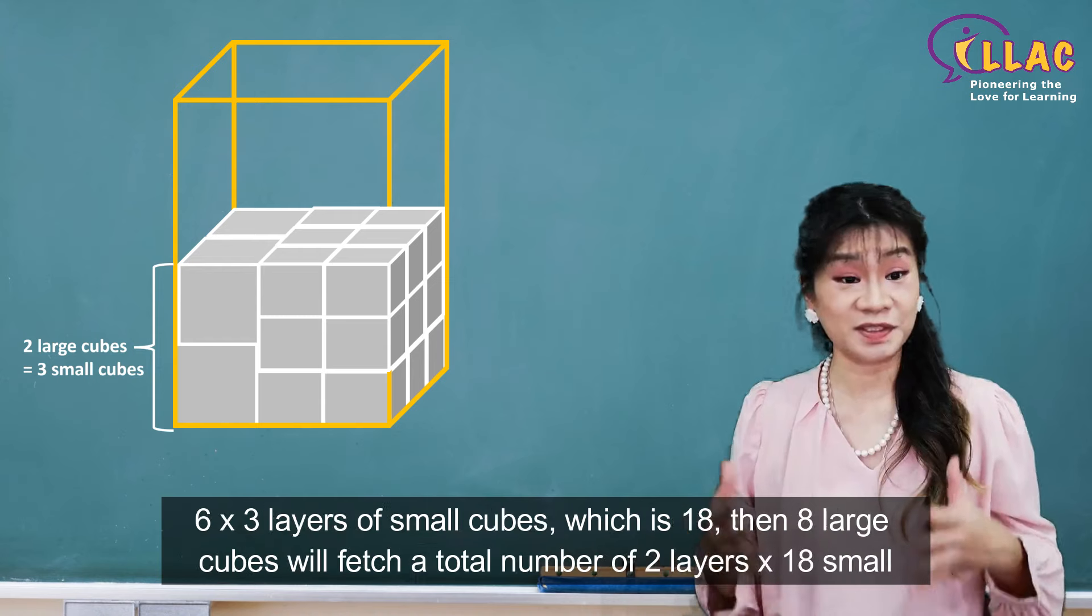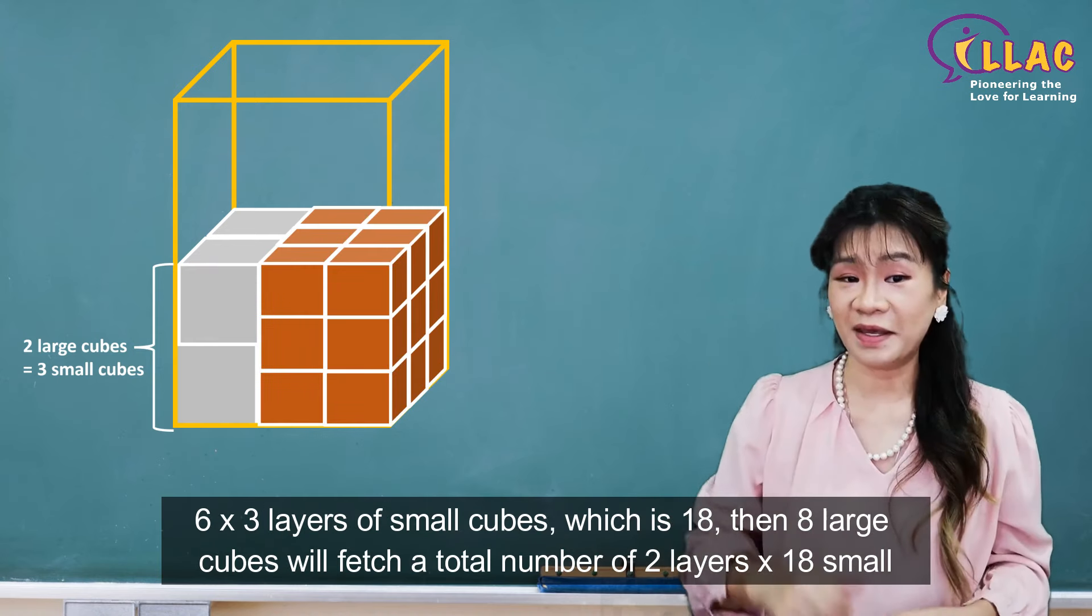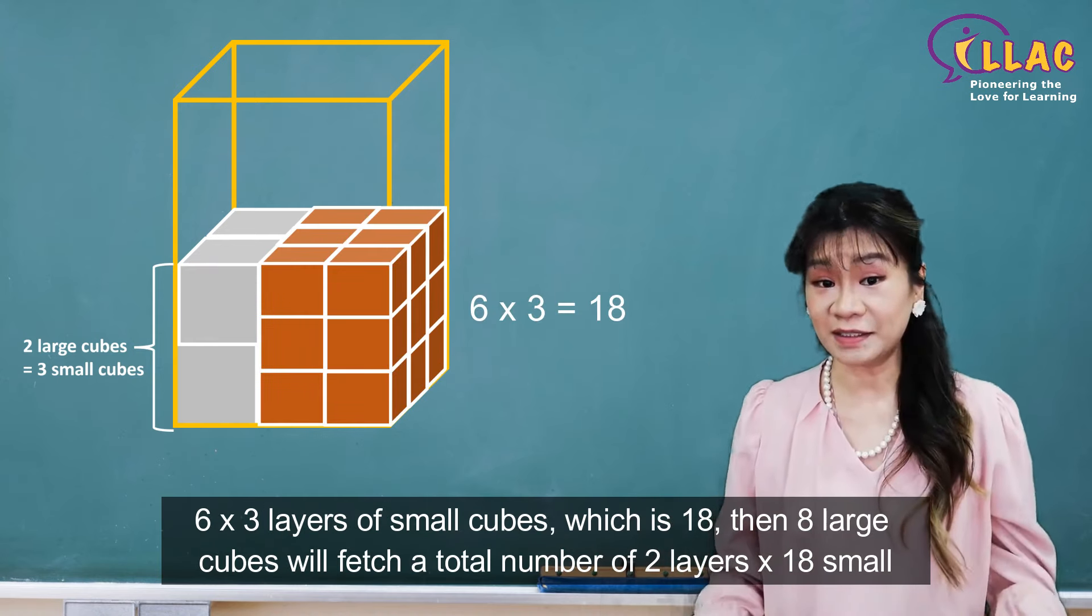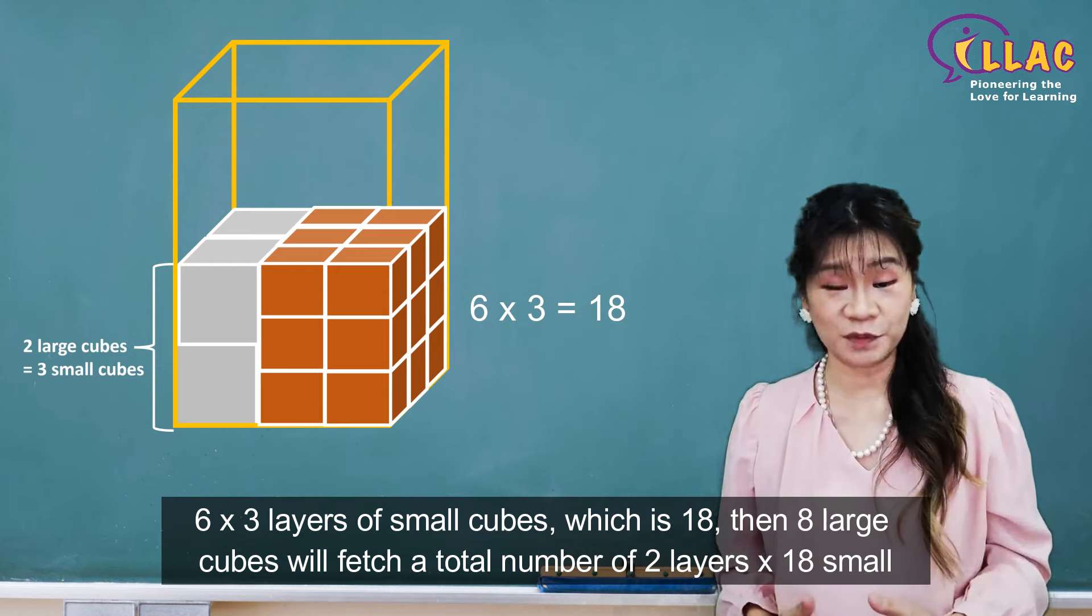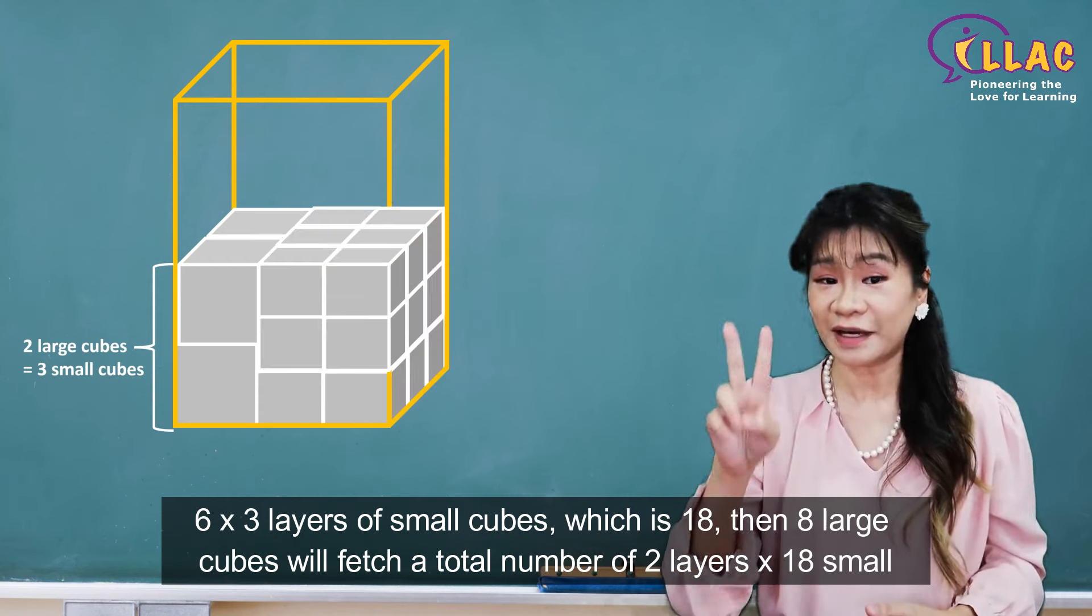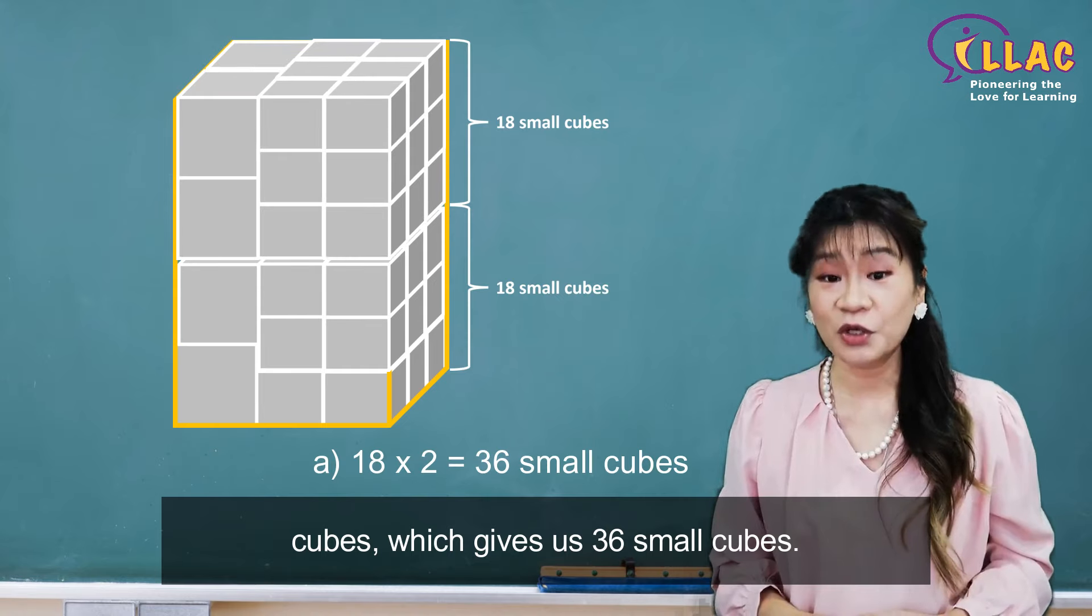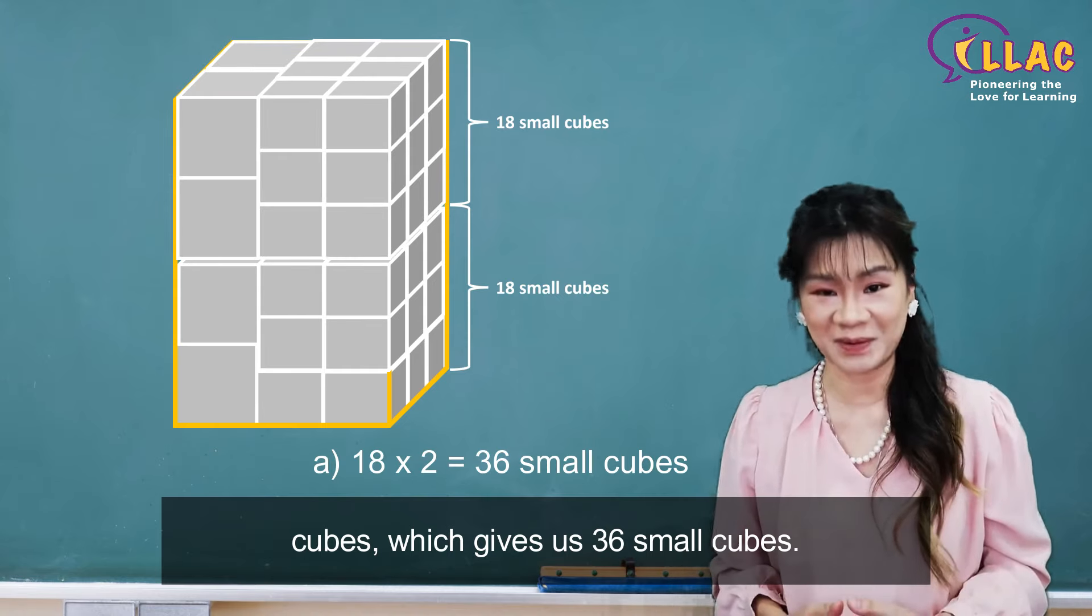If every 4 large cubes is equivalent to 6 times 3 layers of small cubes, which is 18, then 8 large cubes will fetch a total number of 2 layers times 18 small cubes, which gives us 36 small cubes.